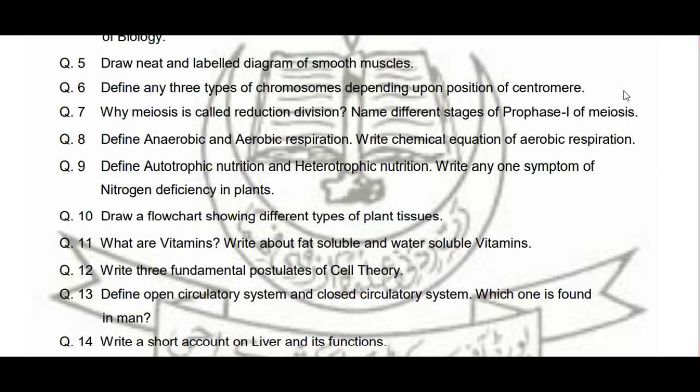Next: 'Define autotrophic nutrition and heterotrophic nutrition. Write any one symptom of nitrogen deficiency in plants.' Autotrophic aur heterotrophic nutrition define karenge aur koi ek symptom batana hai jo nitrogen deficiency ko plants mein batata hai. Next: 'Draw flow chart showing different types of plant tissues.' Flow chart banana hai jis mein different types of plant tissues dikhane hain — yeh book ke chapter mein maujud hai. Then: 'What are vitamins? Write about fat-soluble and water-soluble vitamins.'